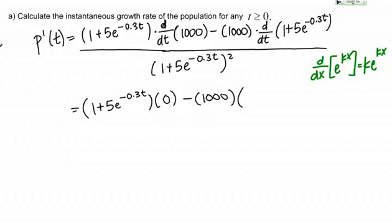Let me remind you of an important derivative. The derivative of e to the KX equals Ke to the KX. Applying that to our situation, the derivative of the 1 is just going to be 0, and then I'm going to keep the 5 out front, and then the derivative of e to the negative 0.3T is going to be negative 0.3e to the negative 0.3T. That was a lot of pieces but hopefully you were able to catch all of that.